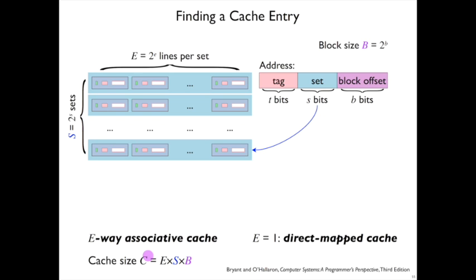Note also that the cache size, which we abbreviate as C, that's the product of the number of bytes in a given block, the number of sets that have those blocks, and the number of blocks per set, which is the associativity E. So E times S times B is the cache size in bytes.